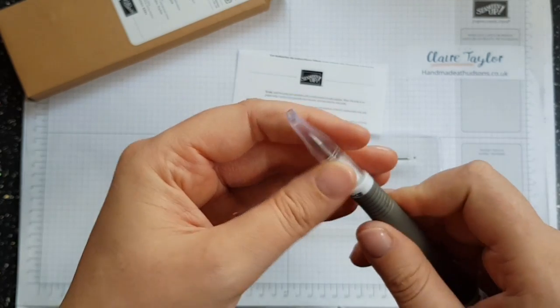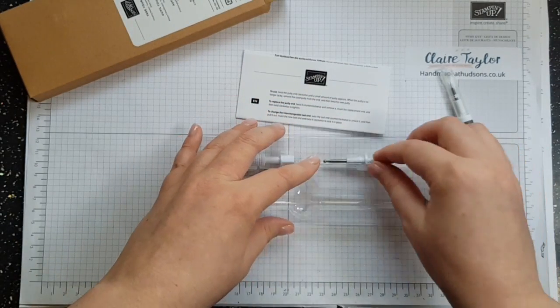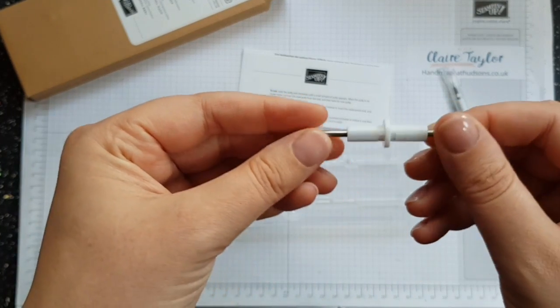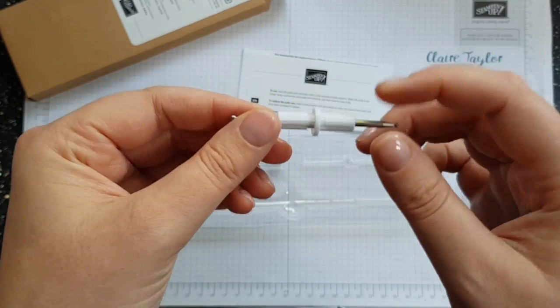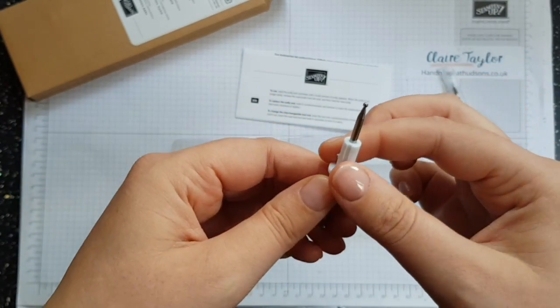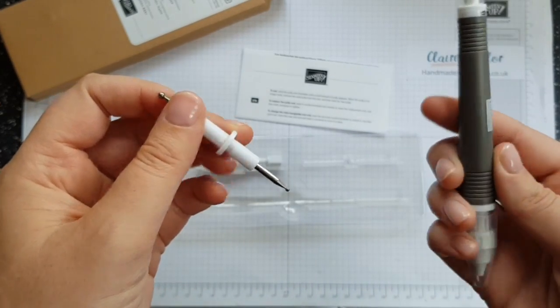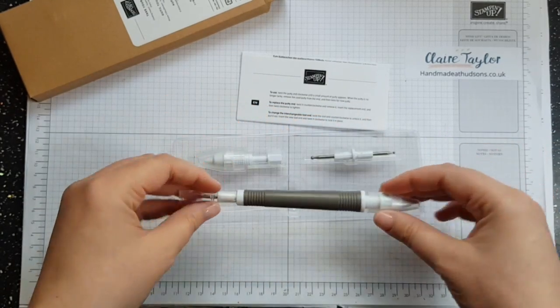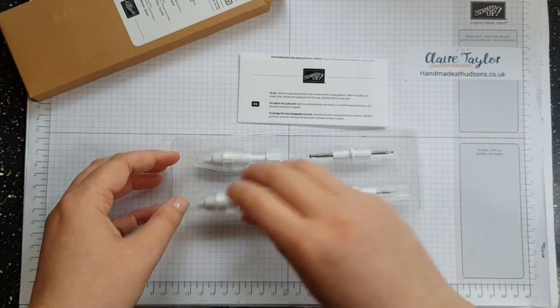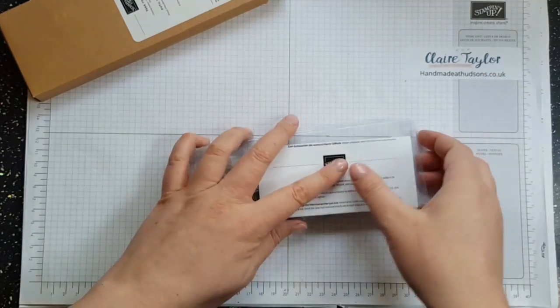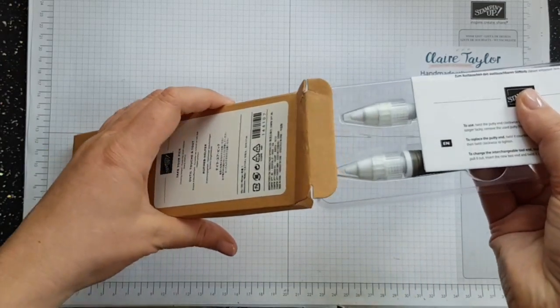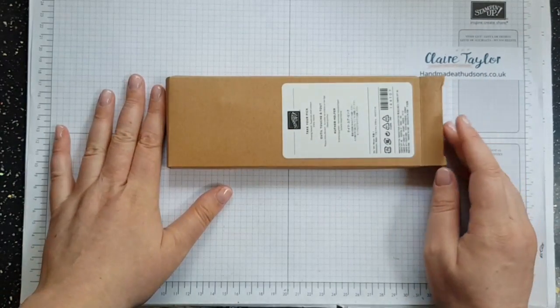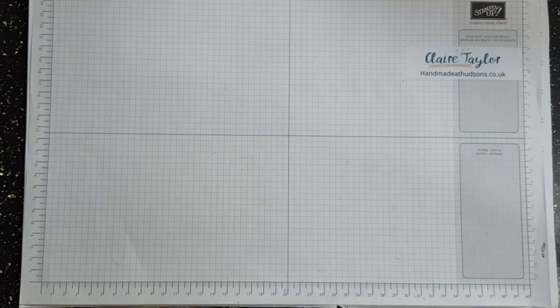You've got spatula and then you've got a pointer tool which is very very sharp, don't stab yourself with it because you will hurt yourself. I'm going to turn that around because I think I'm going to use my pointer tool more and then we have got a stylus. So this is the perfect replacement for if you have lost your stylus on your simply score tool and you can use this as a multi tool rather than having separate tools for everything. These are absolutely gorgeous and I will be putting this away and playing with this over the next few days and you'll probably see it in my next few videos.